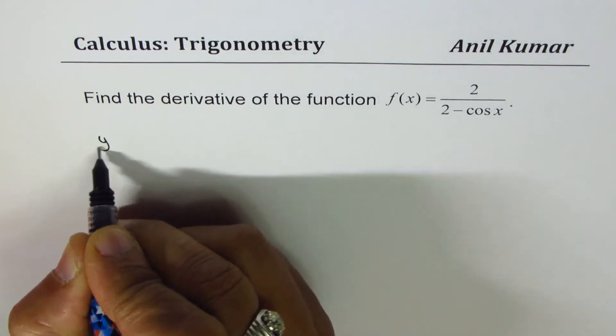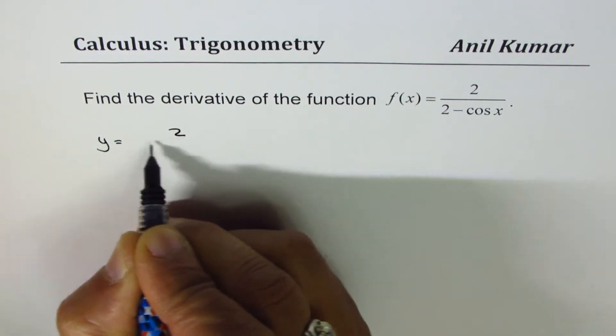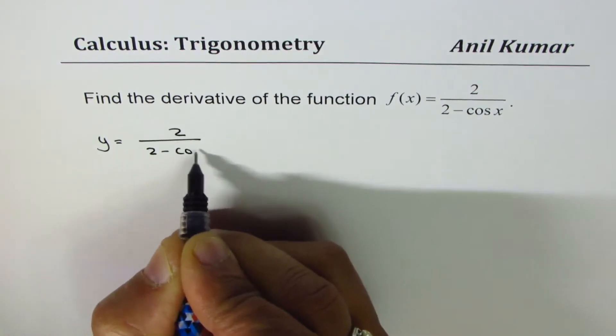Let me rewrite this as y equals 2 over 2 minus cos x.